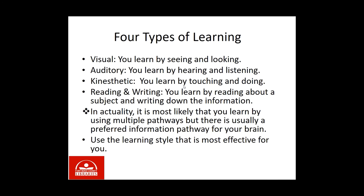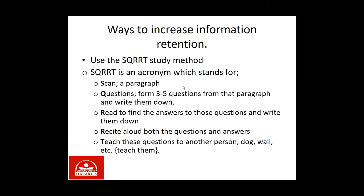There are four types of learning. Visual learners learn by seeing and looking. Auditory learners learn by hearing and listening. Kinesthetic learners learn by touching and doing. Reading and writing learners learn by reading about subjects and writing down information. In reality, it's most likely that you learn by using multiple pathways, but there's usually a preferred information pathway for your brain. Use the learning style that's most effective for you.